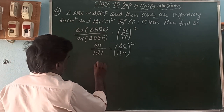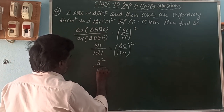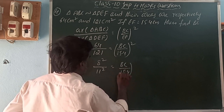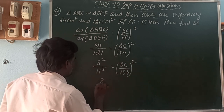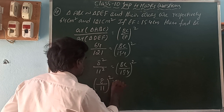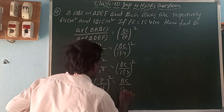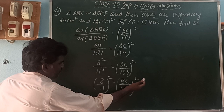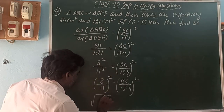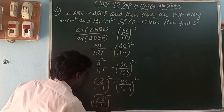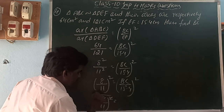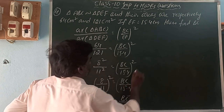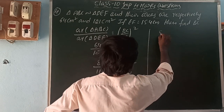Taking square roots: 8/11 = BC/15.4. So BC = (8 × 15.4)/11. BC length is 11.2 cm.